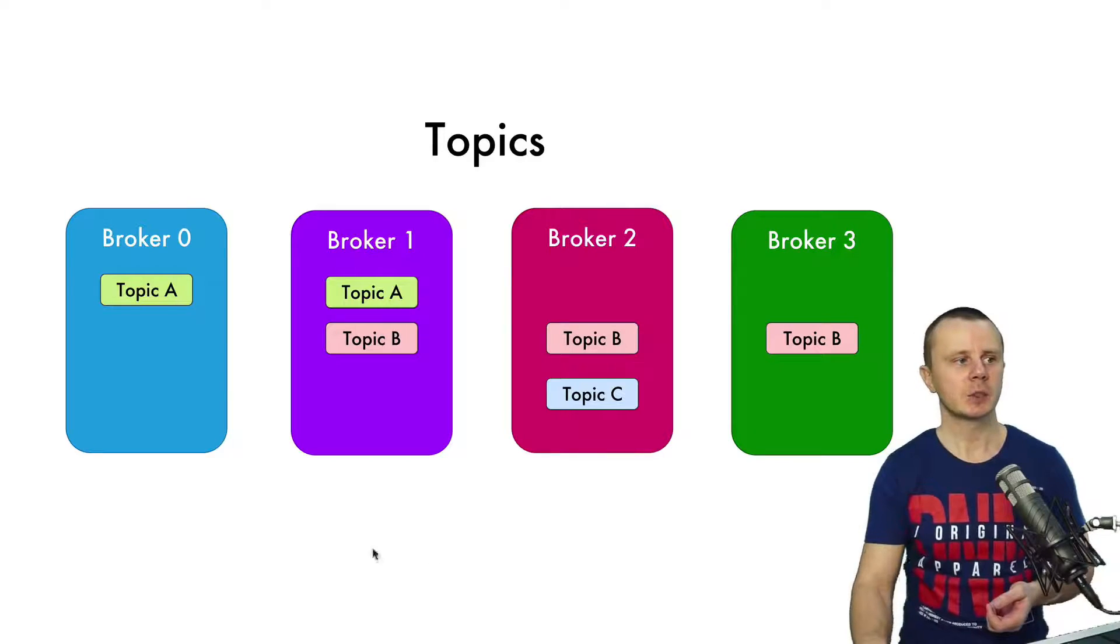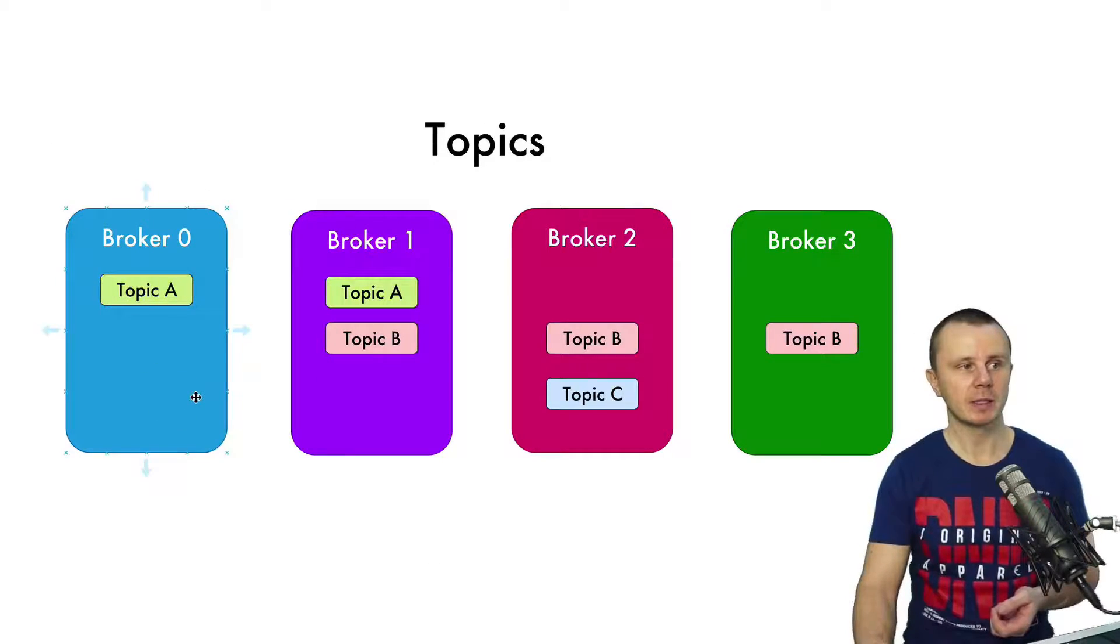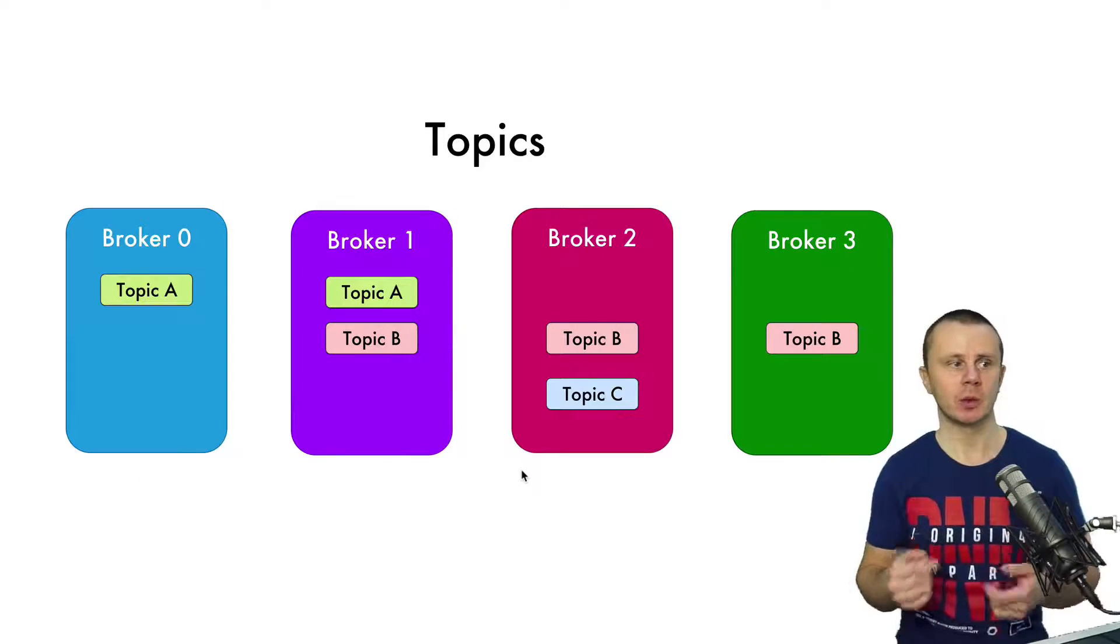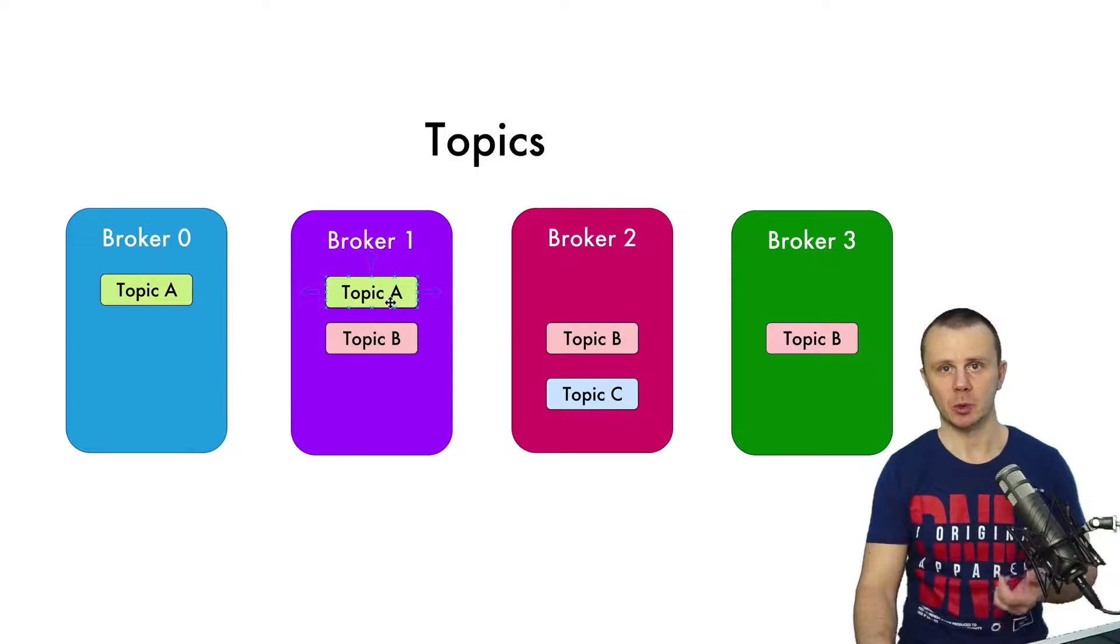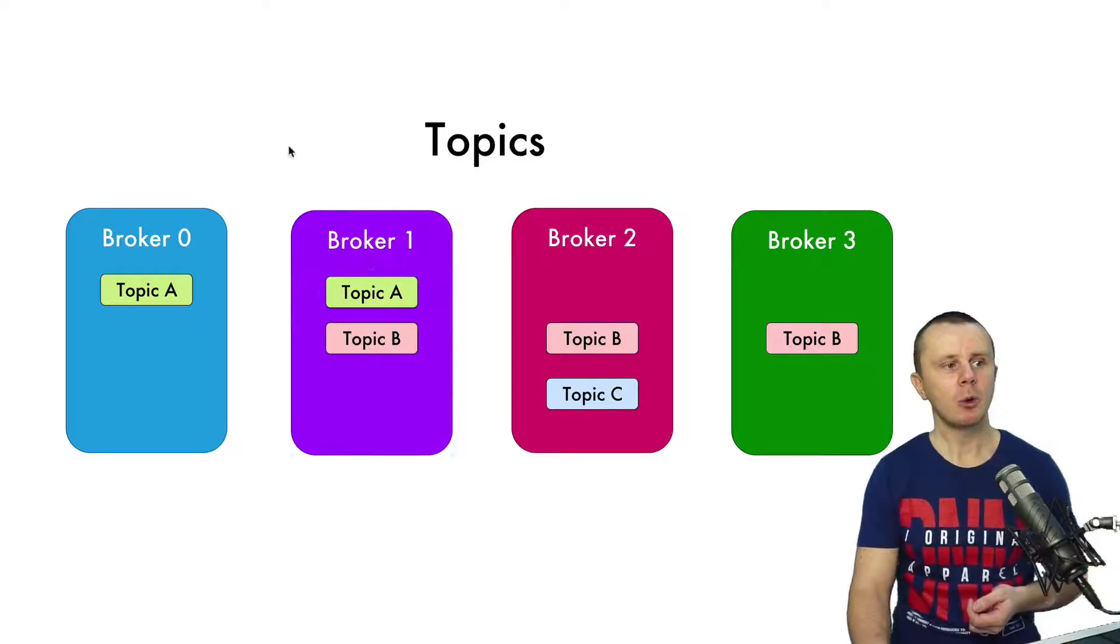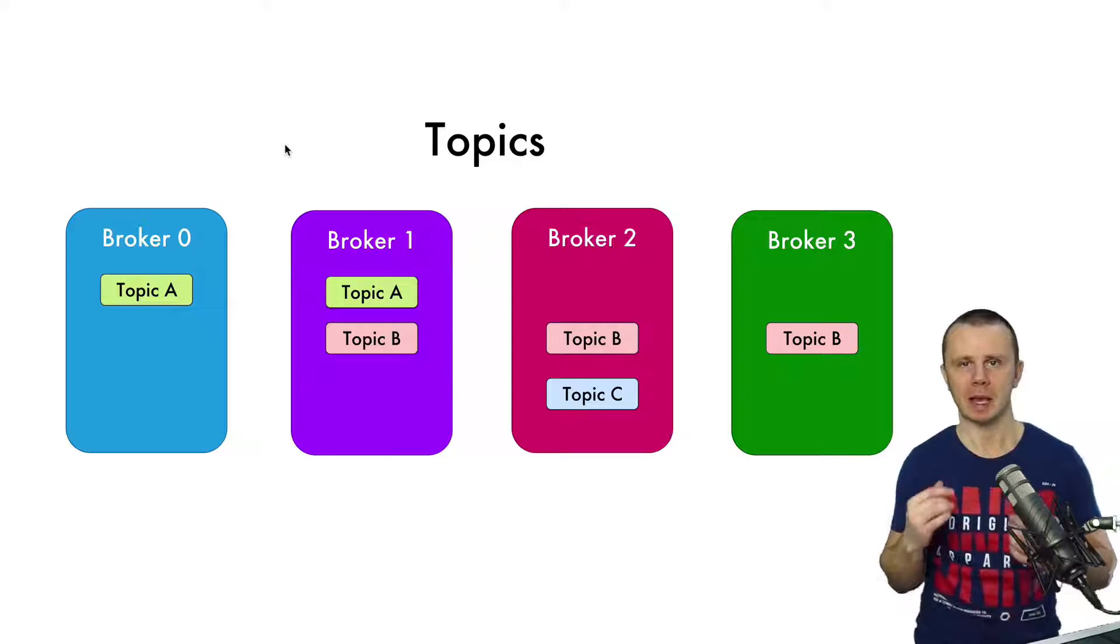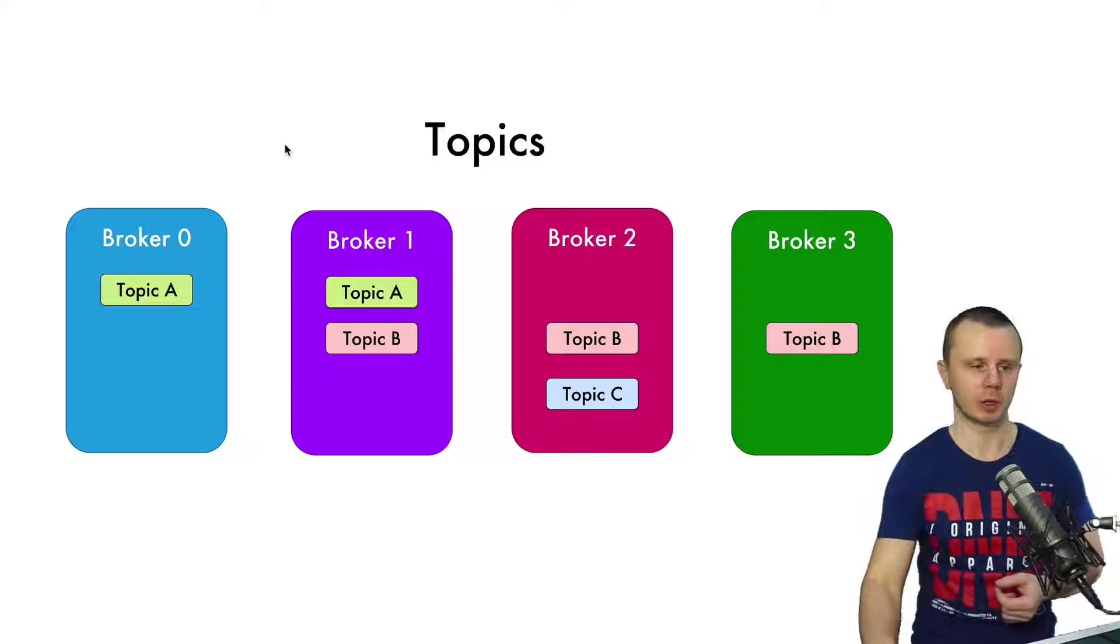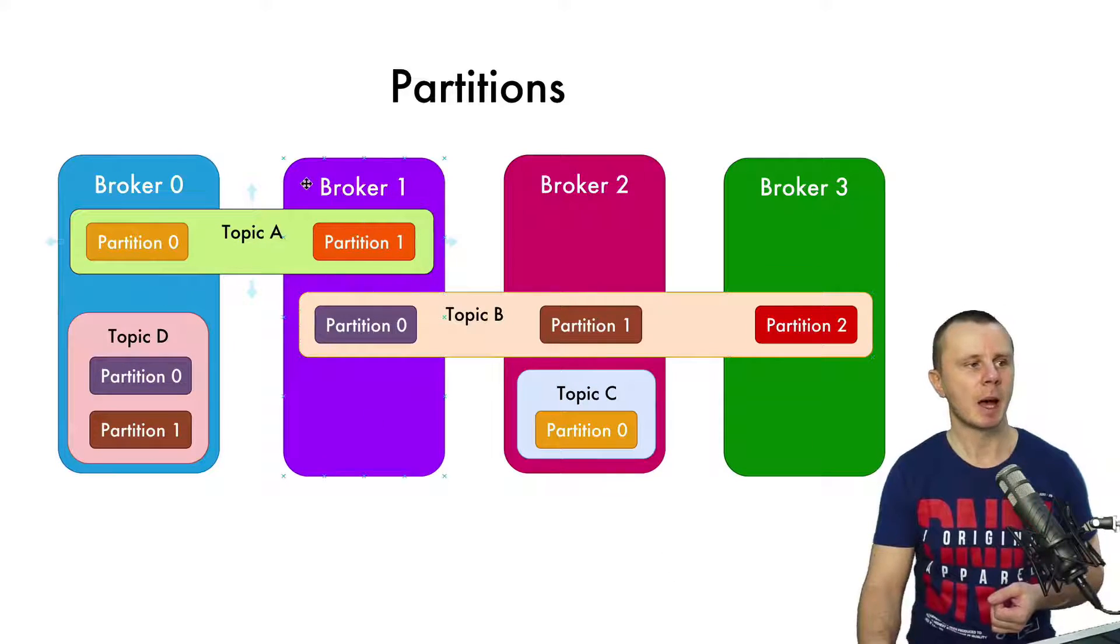In the case of Topic A, if broker 0 fails, broker 1 will still be able to save new messages that arrive to Topic A and serve reading requests from consumers. But how actually are messages spread among different brokers when the same topic is present on different brokers? For that, Kafka uses partitions.